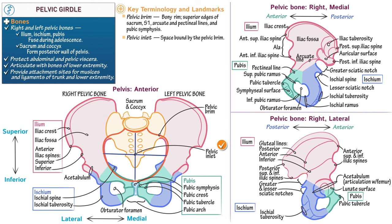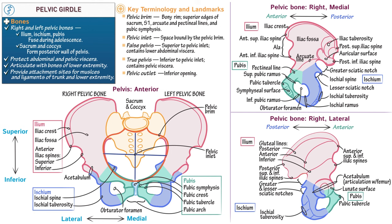The pelvic inlet divides the pelvis into false and true pelvices. Superiorly, the false or greater pelvis is bound by the ala of the ilium and the S1 vertebra, and contains the lower abdominal viscera. The inferior true pelvis, also referred to as the lesser pelvis, contains the pelvic viscera and deep perineum. Finally, the pelvic outlet is the diamond-shaped opening enclosed by the pubic arch, the ischial tuberosities, the coccyx, and the sacrotuberous ligaments. This concludes our diagram.